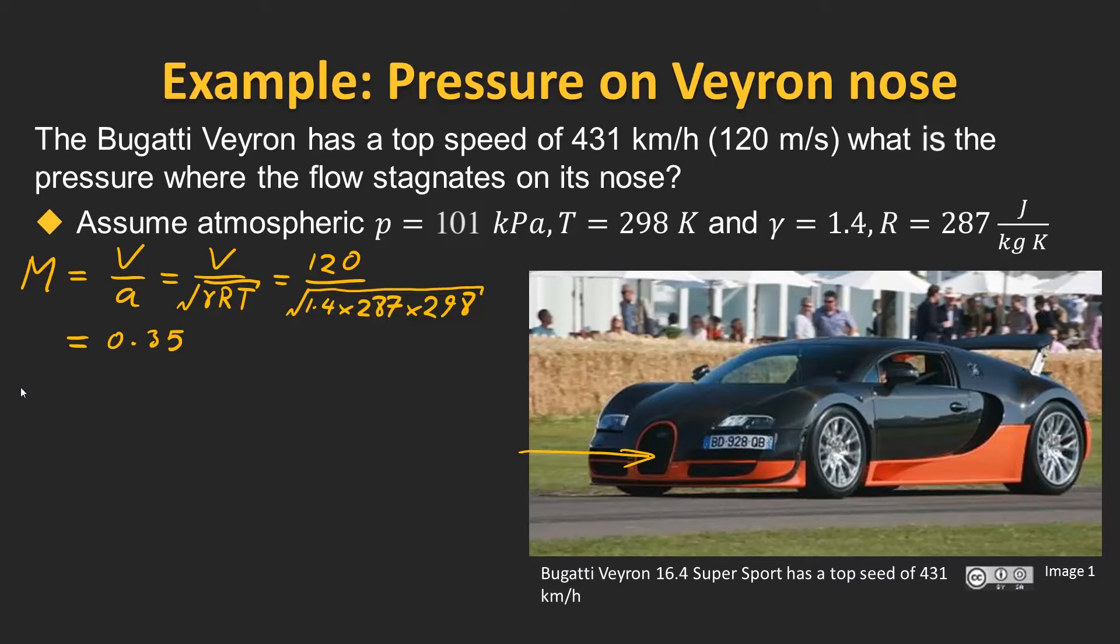Now we can use the expression that we just derived for the stagnation pressure P0. This can be equal to the static pressure multiplied by 1 plus gamma minus 1 over 2 times the Mach number squared to the power of gamma over gamma minus 1.